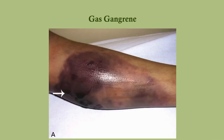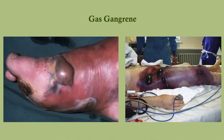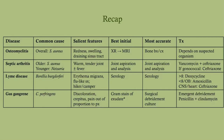This is what gas gangrene looks like — it looks bad, and the patient will describe it as the worst pain they've ever felt. You can see how the bullae form — these are clearly hemorrhagic bullae. Here's a recap of everything we talked about.